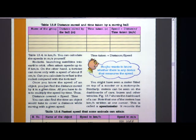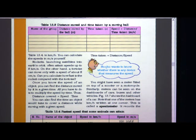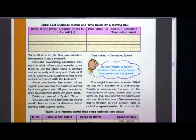Can you calculate how fast the rocket is compared with the tortoise? The speed of a rocket is 8 kilometers per second and the speed of a tortoise is 8 centimeters per second. Once you know the speed of an object, you can find the distance moved by it in a given time — all you have to do is multiply speed by time.